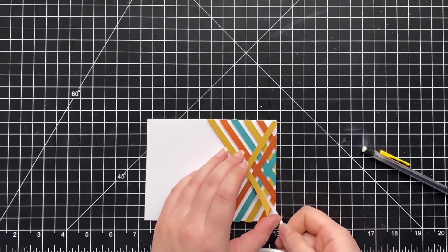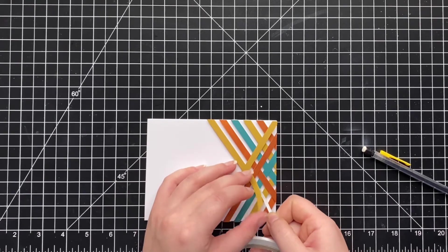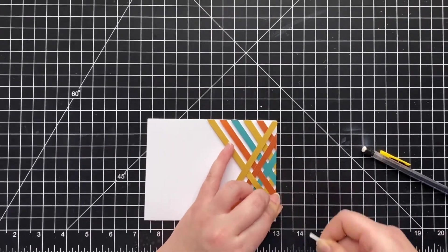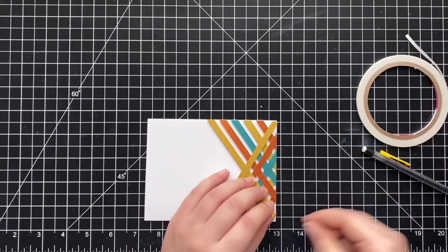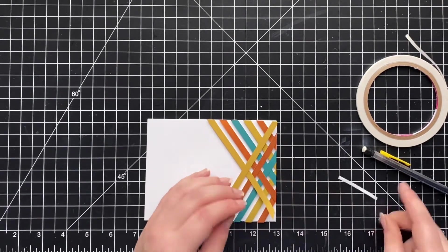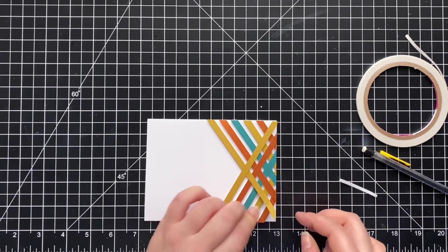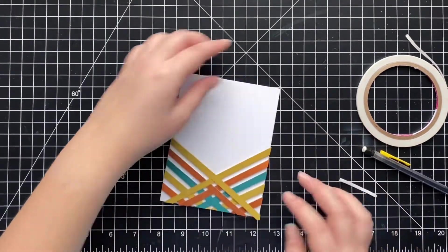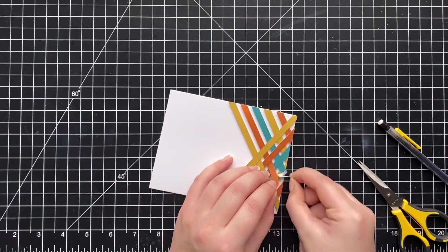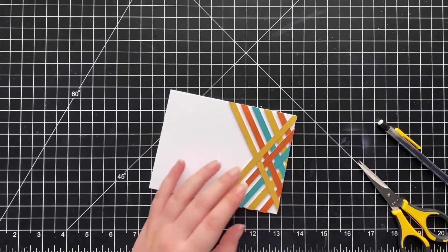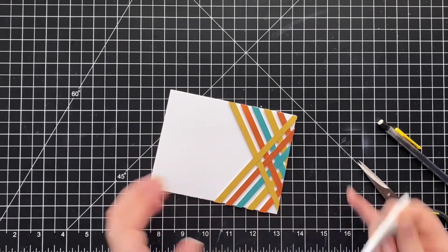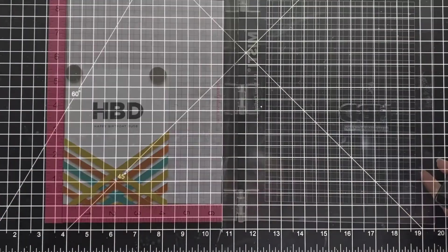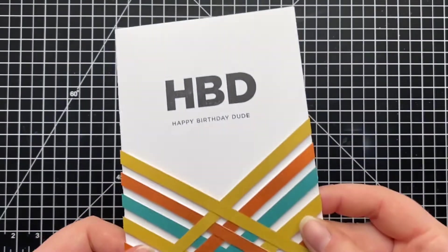So now I'm going to go ahead and adhere the bottom parts of each strip down. Again, don't use double-sided adhesive for this. It just makes everything more difficult. I don't know why I wasn't just like, maybe I should stop and change the plan. I powered through. It is what it is, but take my advice. Liquid adhesive, that's all. So I went ahead and did that for the rest of the strips. And then I'll just stamp the sentiment. Same sentiment from the first card, keeping it clean and simple. I really like how that looks.